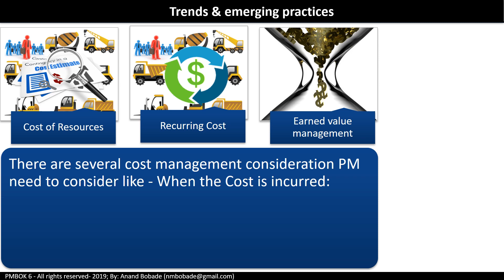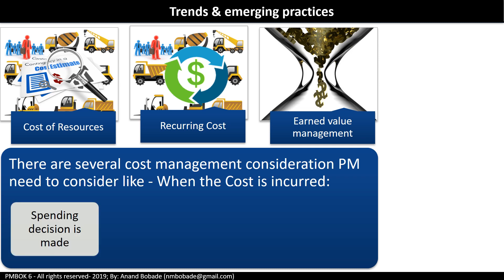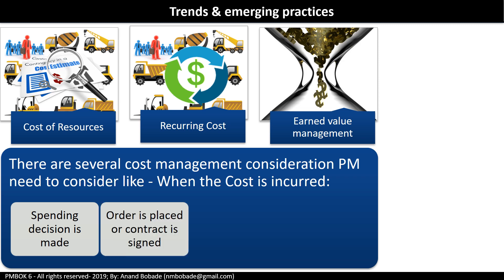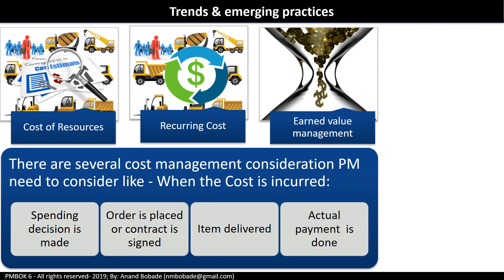There are several other cost management considerations a project manager needs to consider — like when the cost is actually incurred on the project. For example, when a decision to spend is made, such as when a steering committee approves $50,000 for advertisement, or when an order is placed, a contract is signed, an item is delivered, or actual payment is made. In my current organization, cost is incurred when an invoice is signed by the project manager and respective stakeholder and sent to finance for processing. Every organization has a different approach, so specific procedures need to be in place. The project manager also needs to think about return on investment and payback period analysis while preparing the budget.